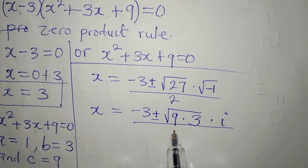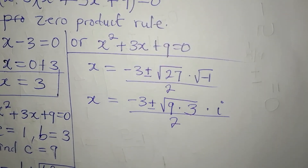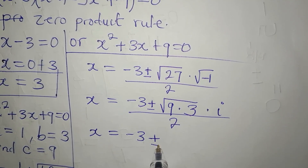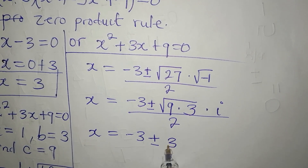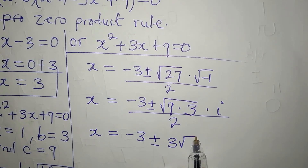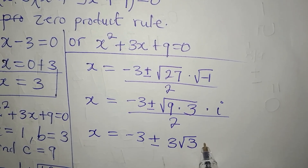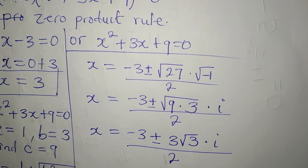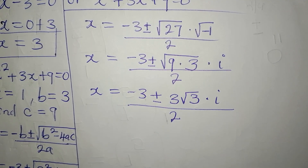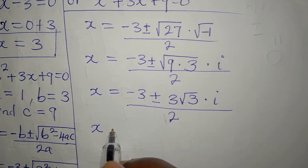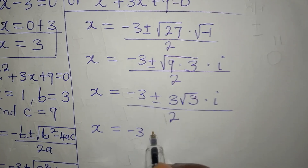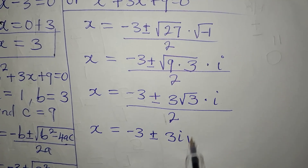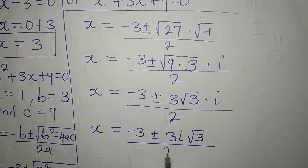So x equals minus 3 plus or minus the square root of 27, multiplied by square root of negative 1 which is i, divided by 2. Since 27 is 9 times 3, we write square root of 9 times 3, and square root of 9 is 3. Then 3 here is not a perfect square so we still write root 3, multiplied by i — all over 2. Rearranging, we get minus 3 plus or minus 3i root 3, all divided by 2.